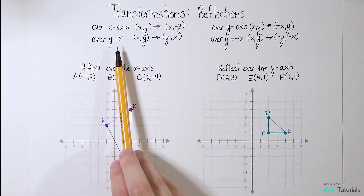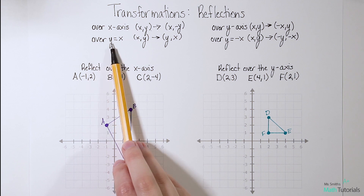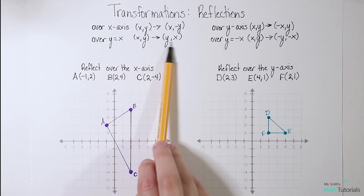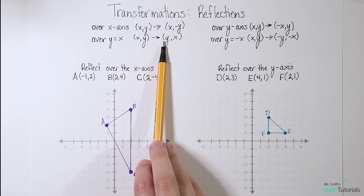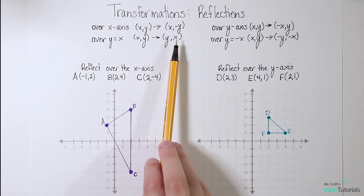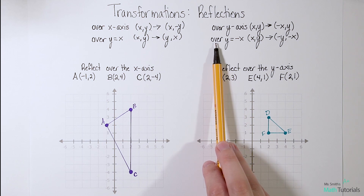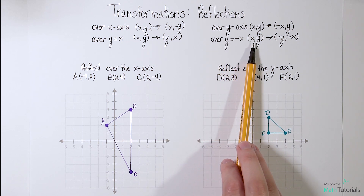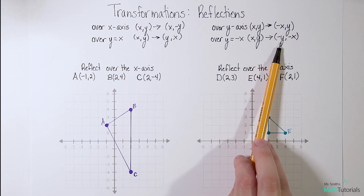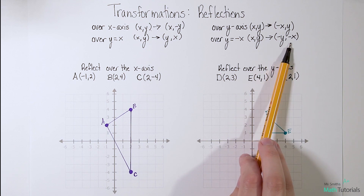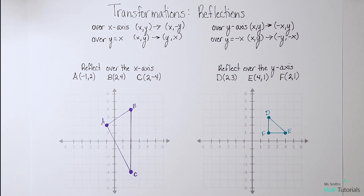Our two other rules: a reflection over the line y = x — that rule is (x, y) becomes (y, x); we just flip them. And then the last one is a reflection over the line y = -x. For this one, (x, y) becomes (-y, -x). So we not only flip them but we also flip their signs as well.